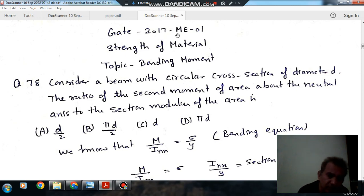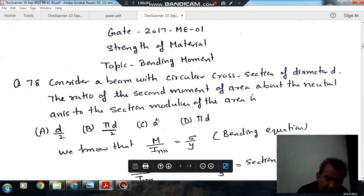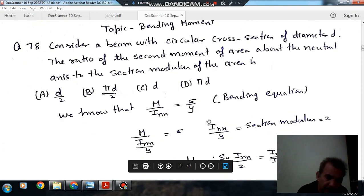Question number 78 from GATE 2017 ME01. Consider a beam with circular cross-section of diameter d. The ratio of the second moment of area about the neutral axis to section modulus of the area is: option A, d by 2; option B, pi d by 2; option C, d; and option D, pi d.